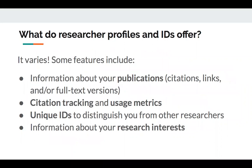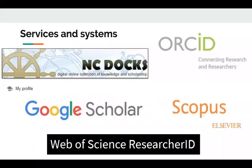What do researcher profiles and systems offer? It can vary by system, but often they include information about your publications, including citations, links, and in some cases full text versions. Some systems include citation tracking and usage metrics. Some offer unique identifiers that can help distinguish you from other researchers. And some might include information about your research interests. We'll go through these systems and services pretty briefly today, though we sometimes do a longer session where we help people set up profiles.